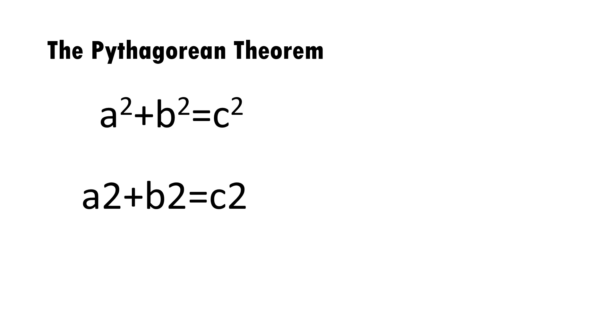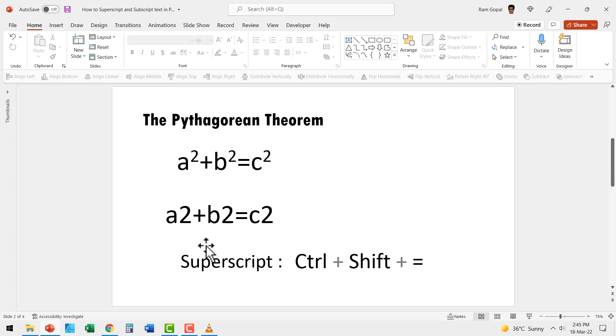Now once you write the text, you select the specific character that needs to be made as superscript and use the shortcut Control+Shift+Equals. Let me show you how it is done. Here I want this particular character to be moved as a superscript. So I've selected that. Now I'm holding Control+Shift+Equals and it is immediately turned into a superscript.